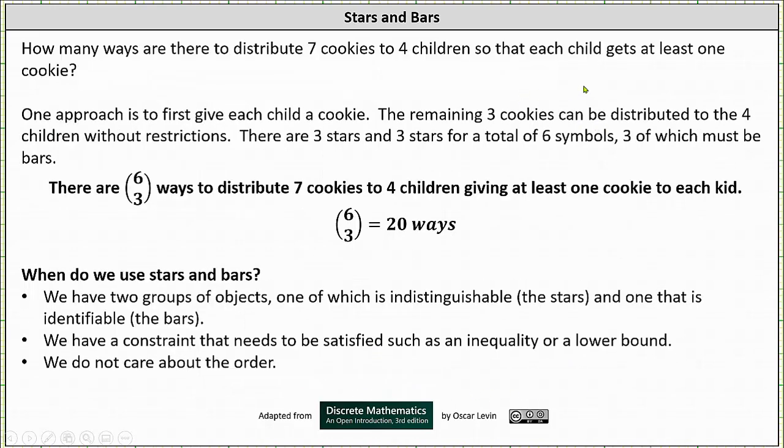Now let's extend our question. How many ways are there to distribute seven cookies to four children so that each child gets at least one cookie? One approach is to first give each child a cookie. The remaining three cookies can be distributed to the four children without restrictions. There are three stars because there are three cookies remaining and we still have four children giving us three bars for a total of six symbols.